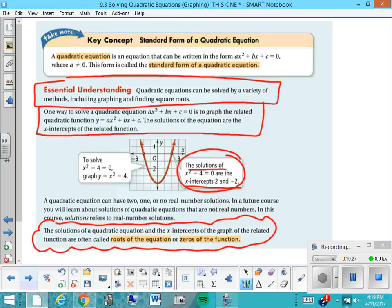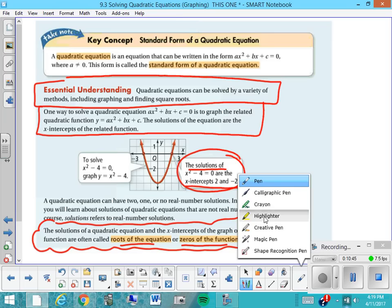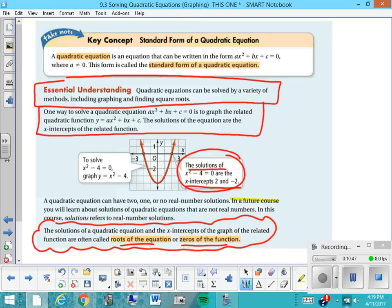and the x-intercepts of the graph of the related function are often called the roots of the equation or the zeros of the function, and I would like you to have those two terms written down. I've probably been using those words, and you didn't know what I was talking about. In a future course, I also want to point out, though you don't have to write this down, you will learn about the solutions of quadratic equations that are not real numbers. In this course, solutions refer to real number solutions.